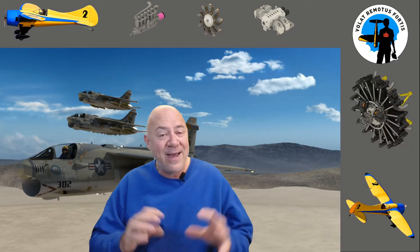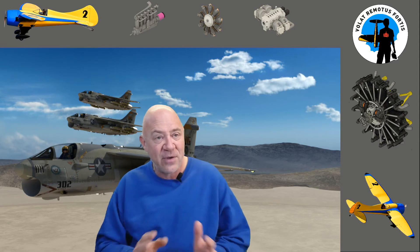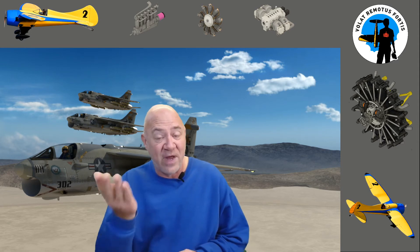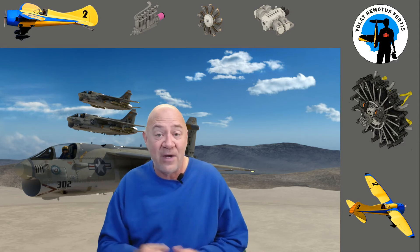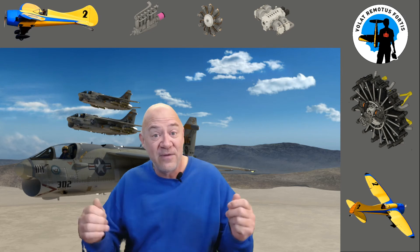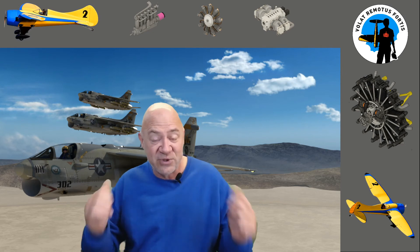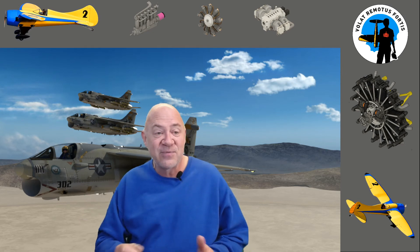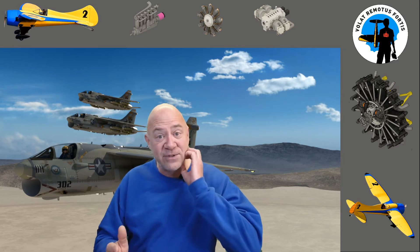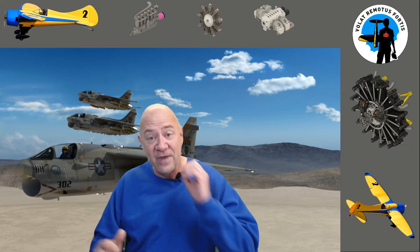Not every airplane would have washout. If it's an aerobatic airplane they won't have washout, because they fly upside down. They don't want the wing tips to have positive incidence versus the root being zero, because then the wing tips would stall first when you're inverted.